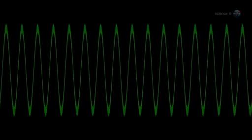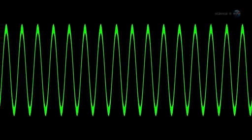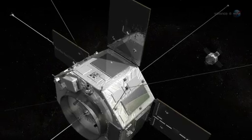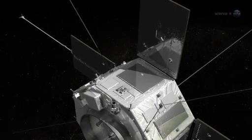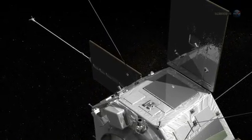He's careful to point out that these are not acoustic waves of the kind that travel through the air of our planet. Chorus is made of radio waves that oscillate at acoustic frequencies between 0 and 10 kilohertz. The long antennas of the radiation belt storm probes are perfect for detecting these kinds of waves.